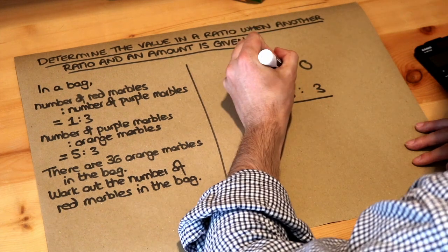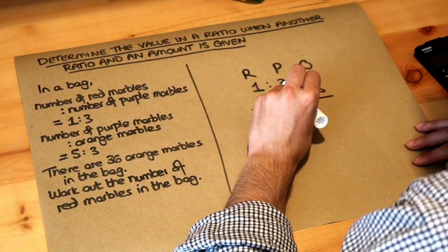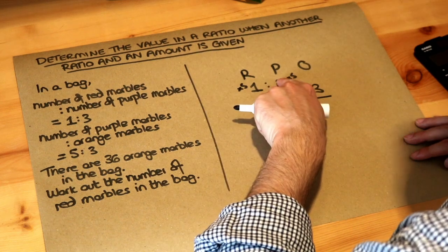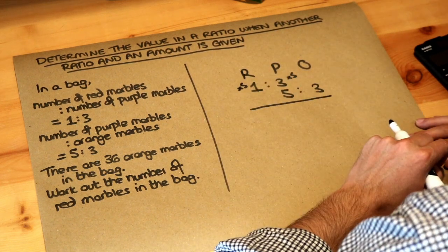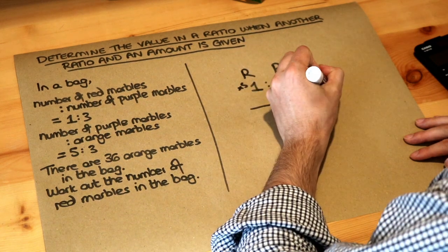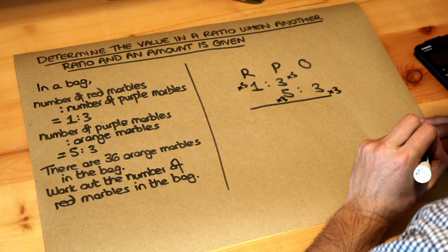Now to get that three to 15 we have to times it by five, and if we're timesing that by five we times the one by five because whatever you times one part of the ratio by you have to times the other side of the ratio by. Now to get the five to 15 we times it by three so we have to times that three by three and that enables us to combine these.